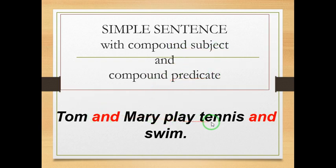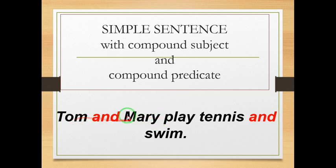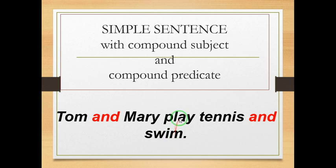Tom and Mary play tennis and swim. The verb — I look for the first verb — is play, so I draw a slash before play. Tom and Mary is the complete subject, and it's a compound subject because we have two simple subjects joined with and. Looking at the complete predicate, we have play tennis and swim — two verbs, two actions — so this makes a compound predicate.